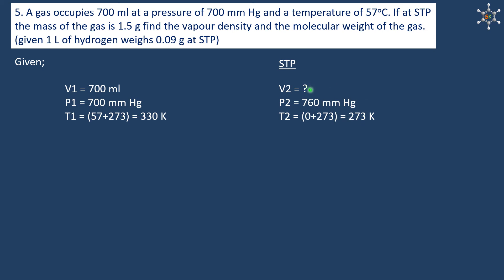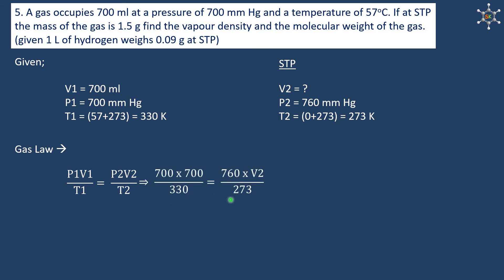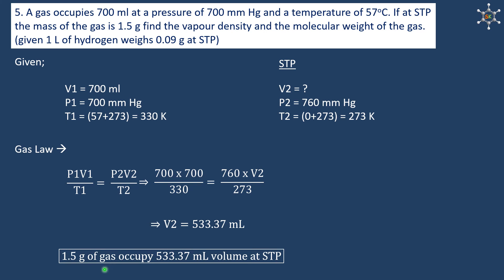We need to find the volume of the same amount of gas at STP using the gas law: P₁V₁/T₁ = P₂V₂/T₂. Upon substitution and solving, we get V₂ as 533.37 ml — the volume occupied by the same amount of gas at STP. Since the mass of the gas at STP is 1.5 grams, we can say 1.5 grams of the gas occupies 533.37 ml at STP.